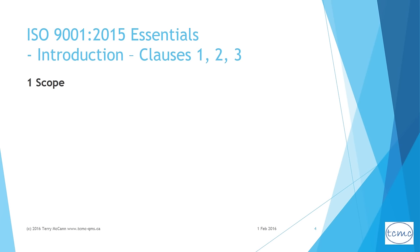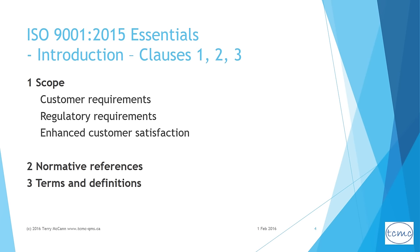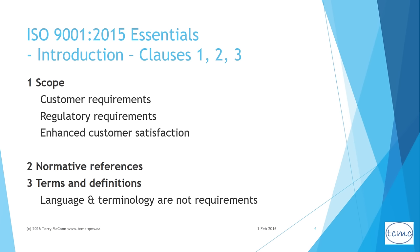Clause 1, titled 'Scope,' describes what meeting the standard is meant to achieve for an organization in terms of meeting customer and regulatory requirements and enhancing customer satisfaction. Clauses 2 and 3 cover terminology with a view to understanding the language in the standard, but not requiring an organization to necessarily use those terms in its QMS documentation.